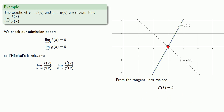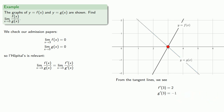So f prime of 3 is equal to 2. Similarly, the graph of y equals g of x has a tangent line at x equals 3, and the slope of that tangent line is negative 1, and so g prime of 3 is negative 1. Our limit of the numerator is 2, our limit of the denominator is negative 1, and so the limit of the quotient is negative 2.